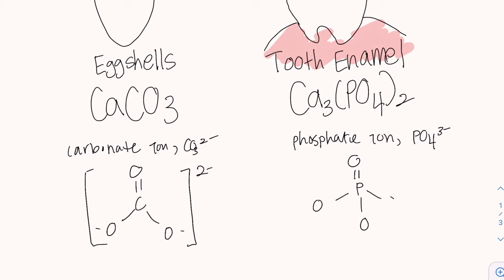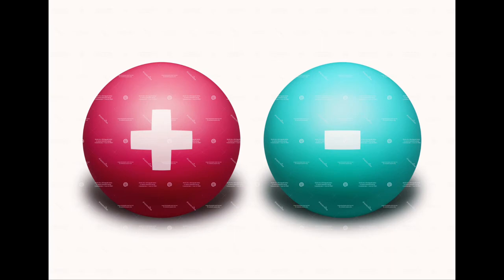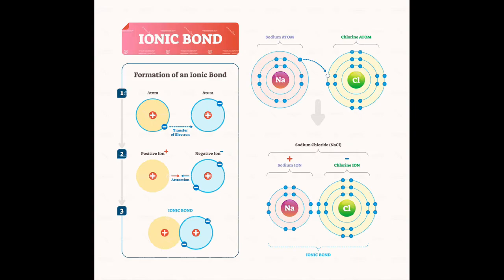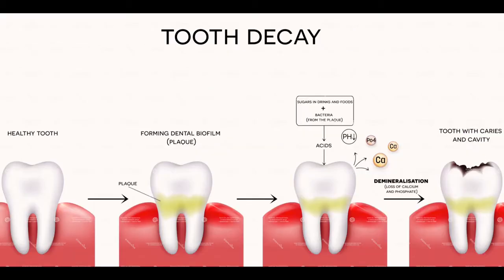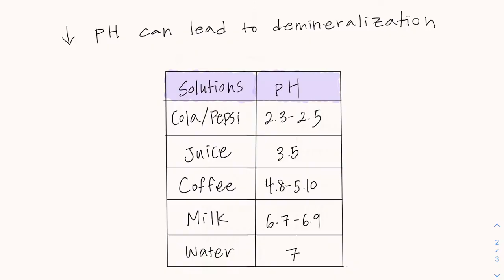Due to the electrostatic attraction between the calcium ion, which is positively charged, and the polyatomic ion that is negatively charged, they are held together by an ionic bond. However, depending on the pH of a solution, this can dissolve both the calcium carbonate and calcium phosphate through a process called demineralization. This results in the weakening of the eggshells and tooth enamel.